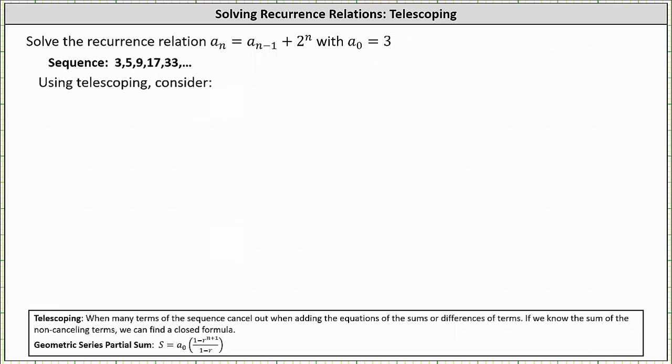We want to solve the recurrence relation a_n equals a_{n-1} plus two to the power of n, with a_0 equal to three. Let's begin by generating the terms of the sequence.